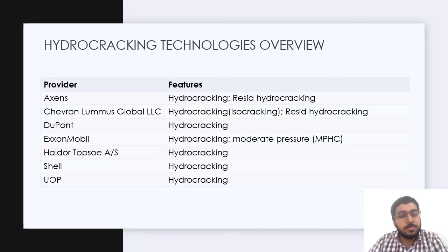So here we are at the end of this presentation. We now know all about the hydrocracking unit. We have seen the single stage hydrocracking unit and some of its pointers. Now let us talk about the hydrocracking technologies overview, their providers and the features of hydrocracking they are providing. First, Axens provides hydrocracking and resid hydrocracking. Chevron Lummus Global LLC provides hydrocracking which is essentially isocracking and resid hydrocracking. DuPont, Haldor Topsoe, Shell and UOP provide only hydrocracking. But ExxonMobil in addition to hydrocracking also provides moderate pressure hydrocracking.